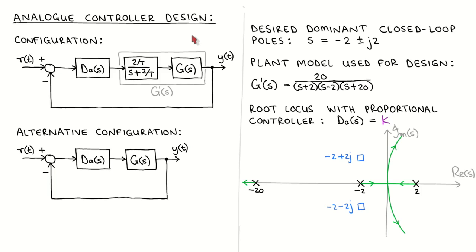The first step in digital controller design by emulation is to design an analog controller, which we will do using the root locus. Since we know that the combination of sampling and zero order hold in the digital control system introduces a half sampling period delay, we can incorporate this delay into the plant model with the Padé approximation as shown here before we do the controller design. We call this augmented plant model G-prime, and our aim is now to design an analog controller D_A for this plant.